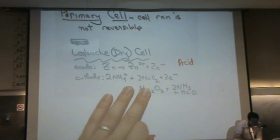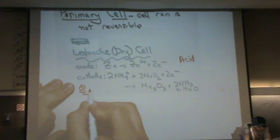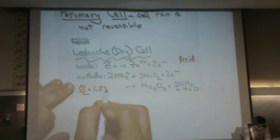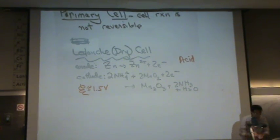We don't use these as much, or you probably haven't seen these as much, but this is the acid version of the dry cell battery. This voltage is about a volt and a half. So we've got approximately a volt and a half.